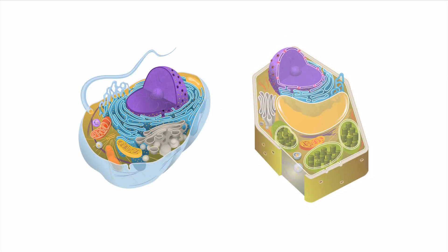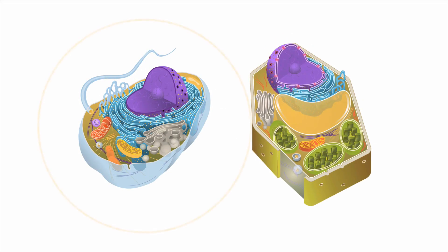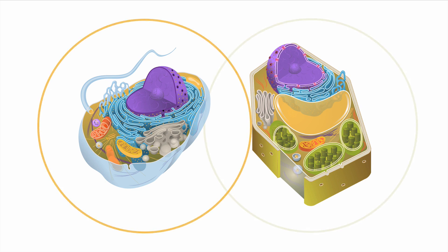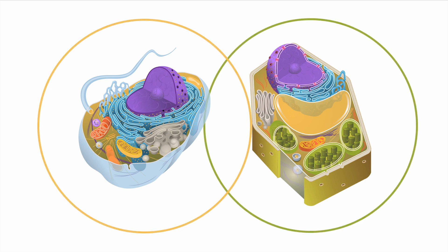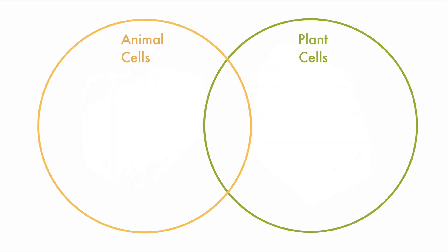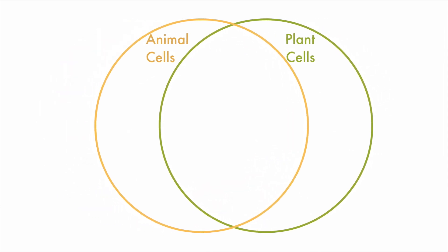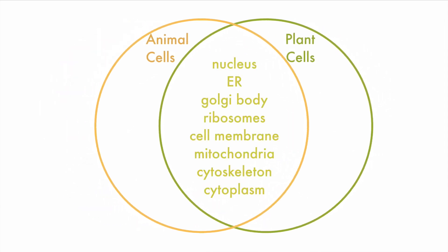Animal and plant cells have a lot of things in common, but there are a few things that set them apart. Plant and animal cells have most of the major organelles like the nucleus, endoplasmic reticulum, and so on, but animal cells have centrioles for division and lysosomes for breaking down substances.